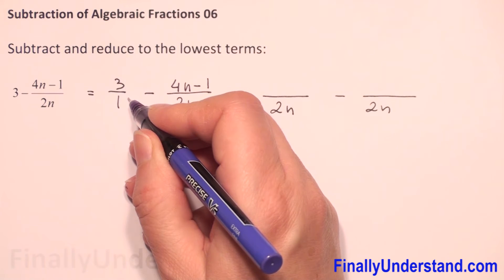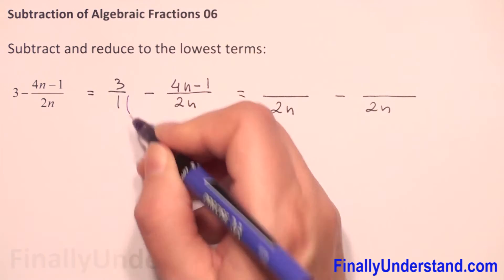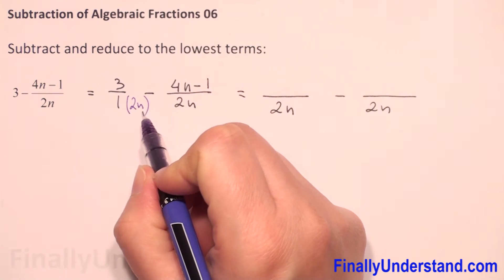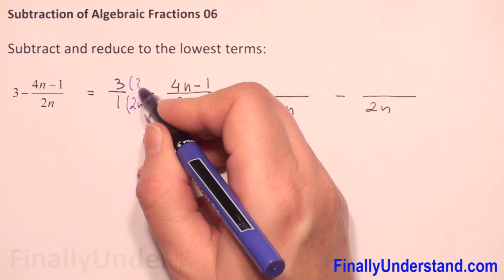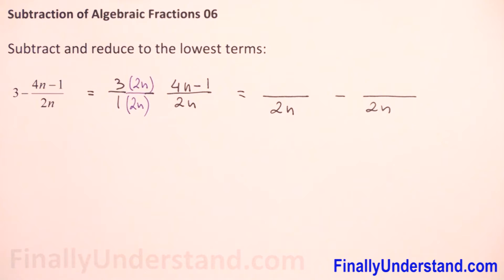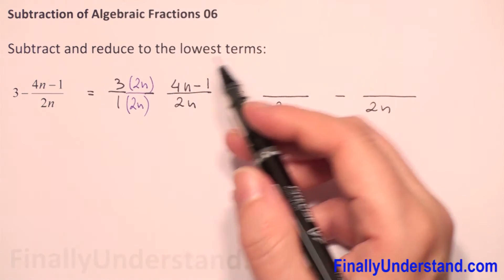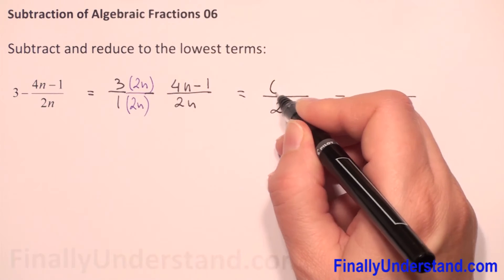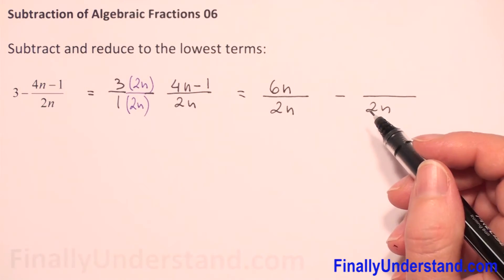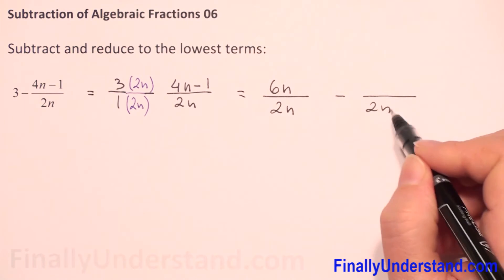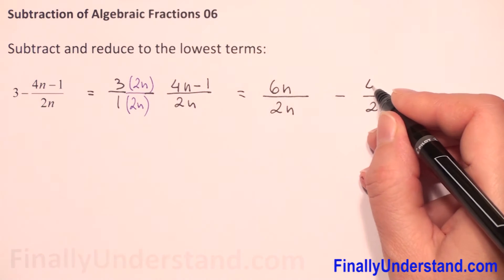It means we multiply 1 by 2n. If I multiply the denominator by 2n I have to multiply the numerator by the same. So now we have 3 times 2n is 6n in the numerator, and the second numerator we didn't change so we will copy it.